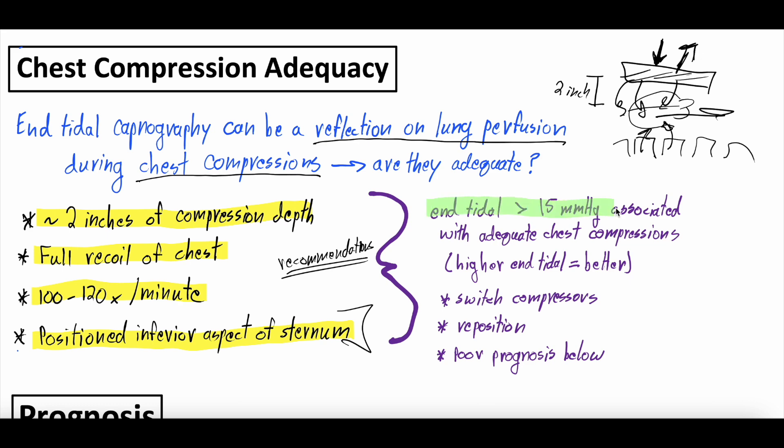That's why it's important to look at the end tidal. Because an end tidal carbon dioxide of greater than 15 millimeters of mercury is associated with adequate chest compressions. Obviously, the higher the end tidal, the better, right? So more than 15 is associated with adequate chest compressions, but you get more than 20, that's better. More than 25, that's even better.